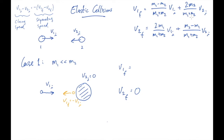The equations confirm this. Since v2i = 0, the second terms drop out. For v1f: the numerator (m1 - m2) ≈ -m2 (a tiny minus a big number), divided by (m1 + m2) ≈ m2, so the coefficient is approximately -1. That gives v1f ≈ -v1i. For v2f, the coefficient is m1/(m1 + m2) ≈ 0, so the bowling ball doesn't move.